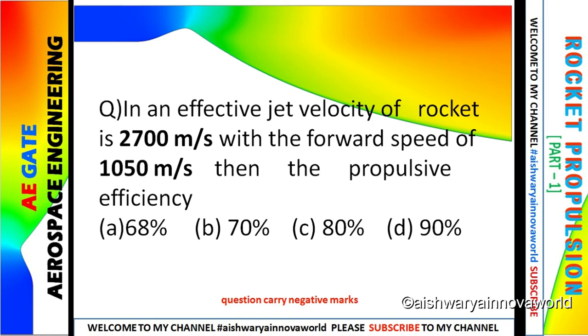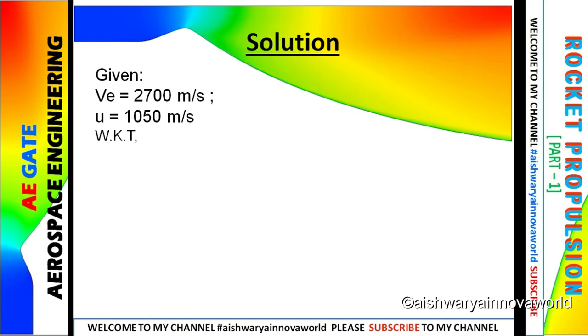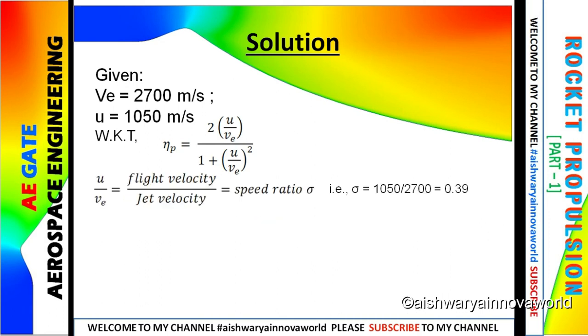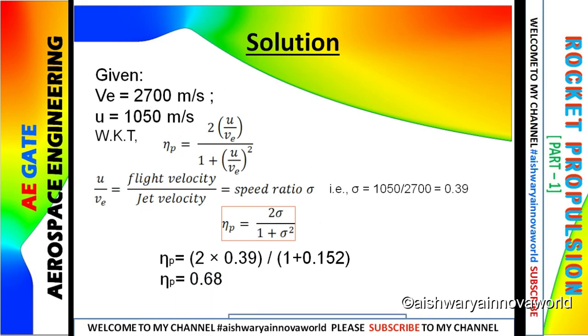We know the formula. What is propulsive efficiency? Write down the formula. Then we can find the speed ratio, that is sigma equals to 1,050 by 2,700, which equals 0.39. And after that use this formula with sigma value. Eta p equals to 2 sigma by 1 plus sigma square. When you substitute, you get 0.68. Since they have asked in percentage, so our answer is 68%.